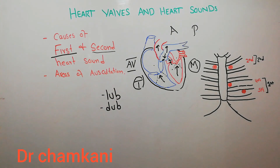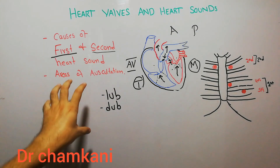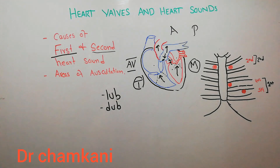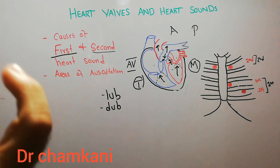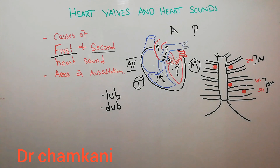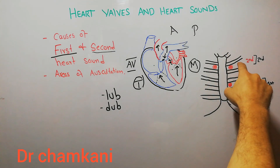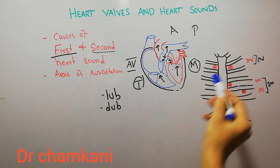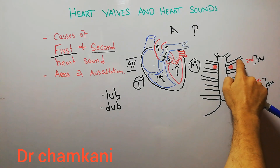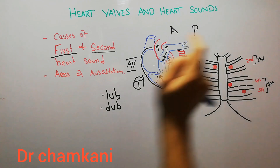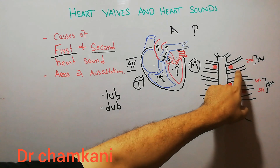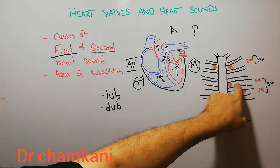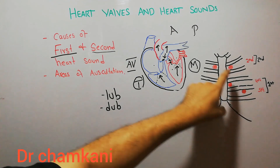Now the areas of auscultation — where to put the stethoscope to properly listen to these heart sounds. If we consider the chest of a normal human being, here we have the ribs. Here is the second intercostal space — the space between the second and third rib. Here we have the third intercostal space, the fourth intercostal space, and the fifth intercostal space, corresponding to the second, third, fourth, and fifth ribs.